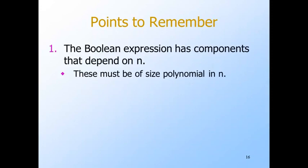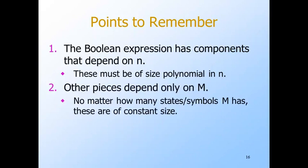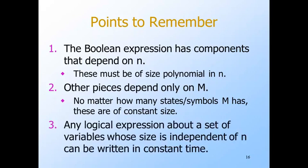Some components depend on W and therefore depend on N. These must be of size polynomial in N and we can write them in polynomial time. The second kind depends only on M. These take constant time as far as input size is concerned — M may have lots of states and tape symbols, but these quantities are independent of N. If an expression has a set of arguments whose size is fixed independent of N, then no matter how large the number is, it is a constant as far as N is concerned. So the time to write any such component is a polynomial in N — in fact, it's a 0th degree polynomial.